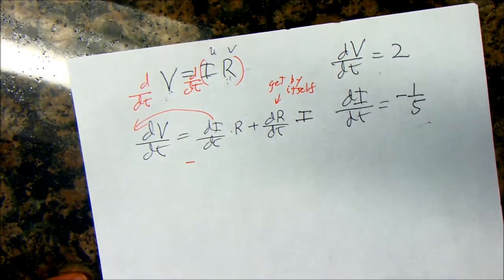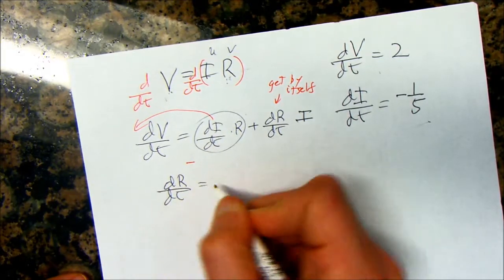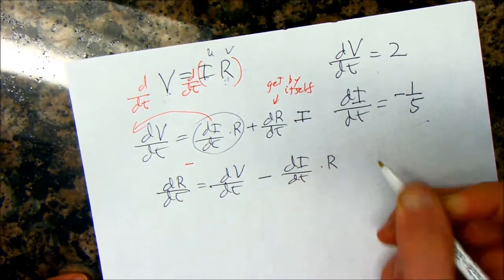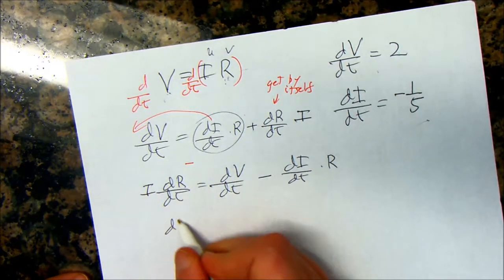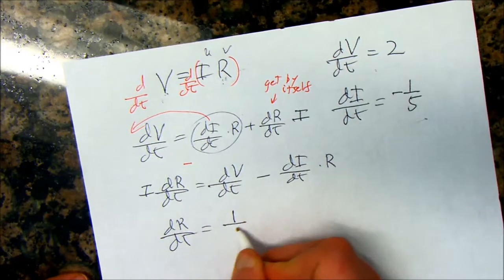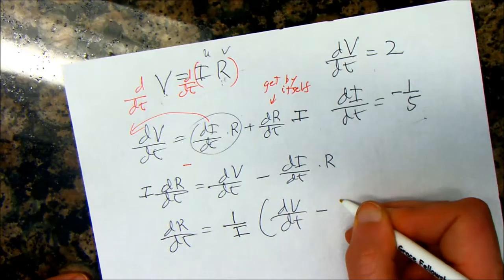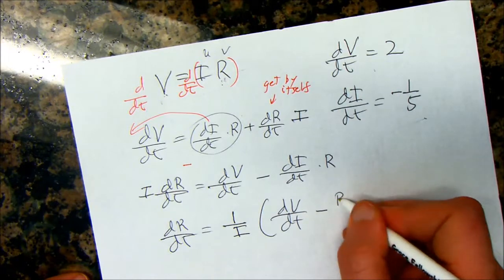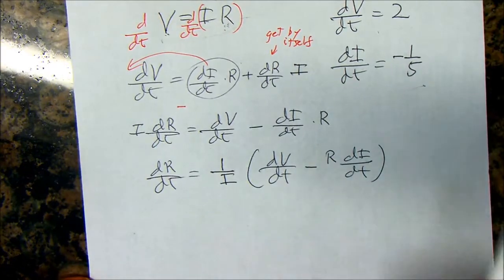What is the question asking for? It's asking for dR/dt. So, I need to solve, I need to get by itself the dR/dt. So, subtract this whole term over to the other side. And, I get dR/dt is equal to dV/dt minus dI/dt times R. And, there's an I here in the front. Now, divide away the I. So, dR/dt is equal to 1 over I times dV/dt minus R times dI/dt.